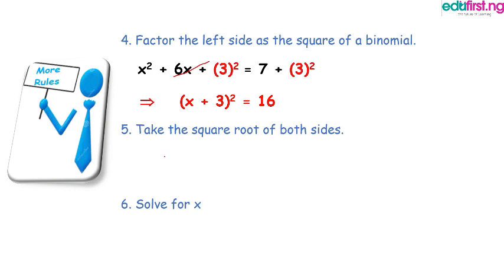Rule five says take the square root of both sides. So we have to square root both sides of the equation. That's what he's saying. So that's how we've got this. Two is going to cancel square. So we are left with x + 3. Remember your indices.